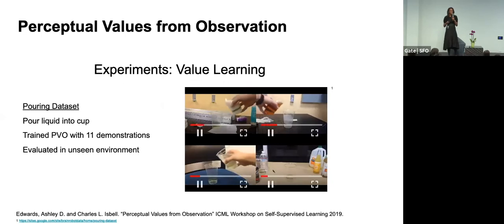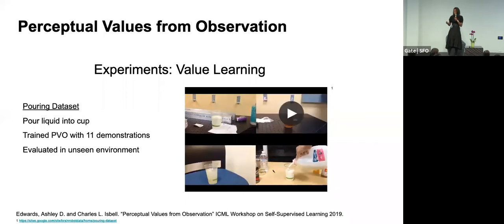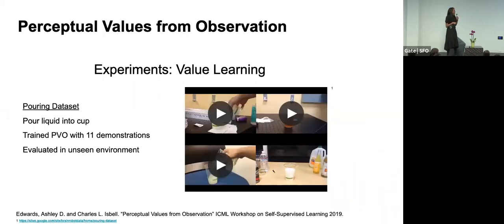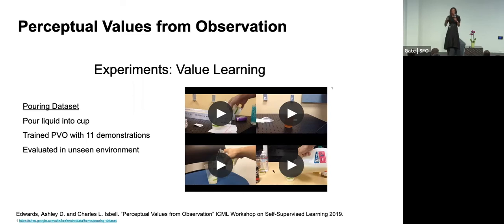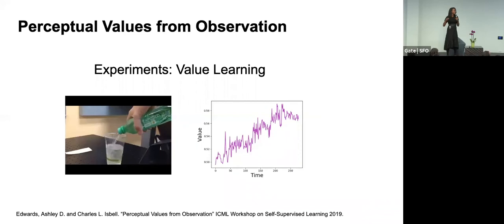In the next experiment, we use videos of people pouring liquids into cups — an environment used to train robots to pour liquids, with different cluttered environments. We train on some environments and test on a completely unseen one: as the agent pours more, the value should increase. You can see that as time goes on and we go further into the video, the value goes up, which is again what we want to see.